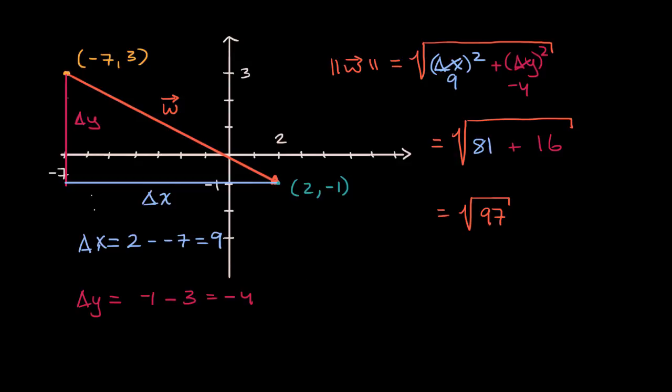And so for example, in this situation, you could actually define our vector w by the sum of two vectors. One of which is the x component. So you could view this as the x component of w. And then the other is the y component. You could view this as the y component of w.